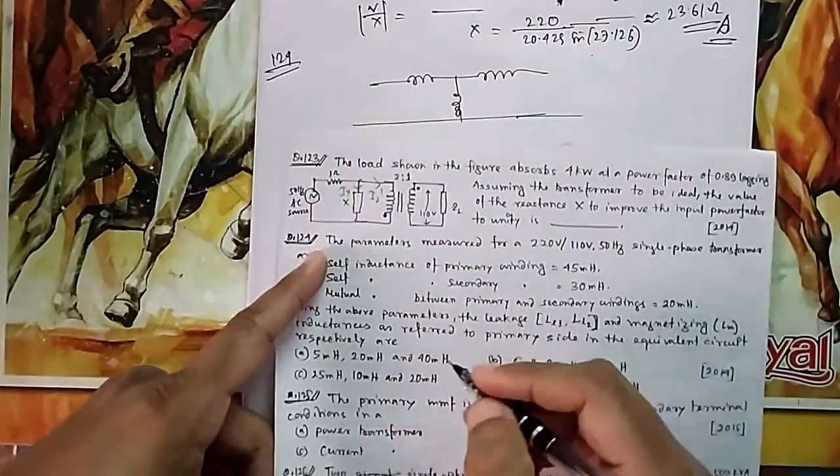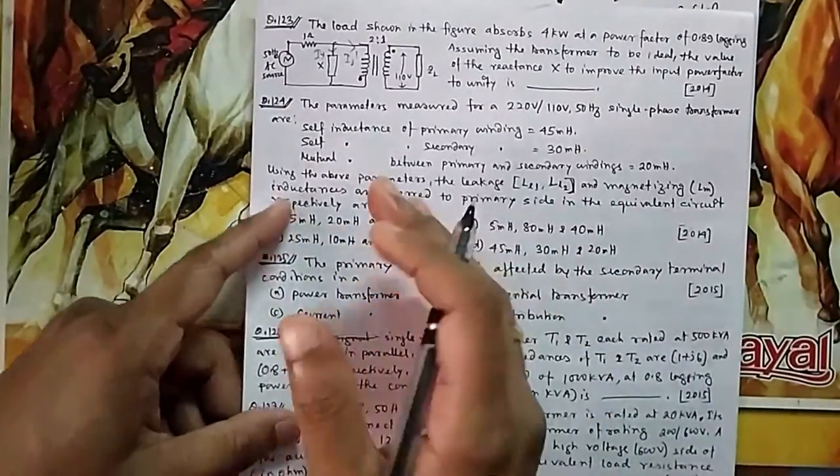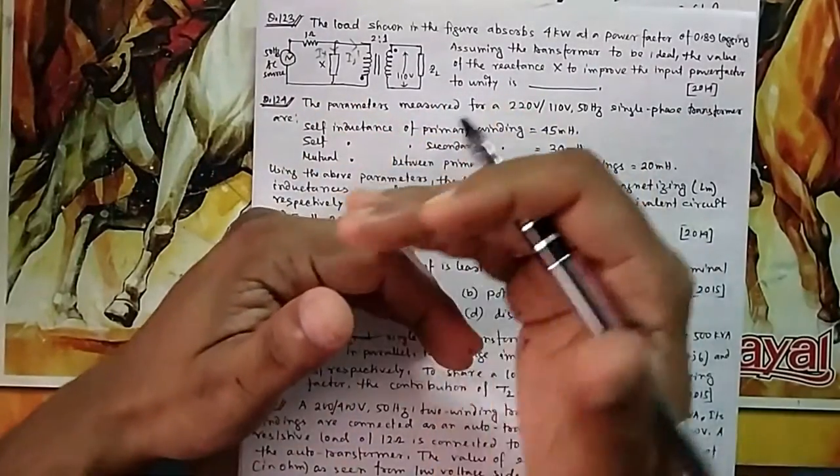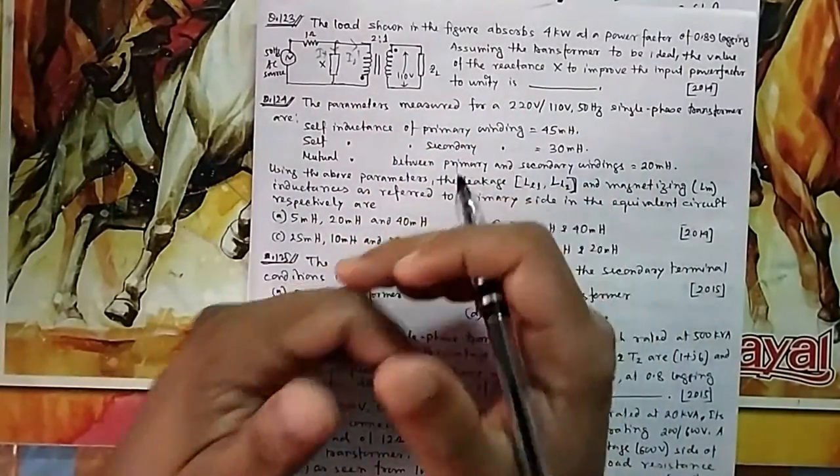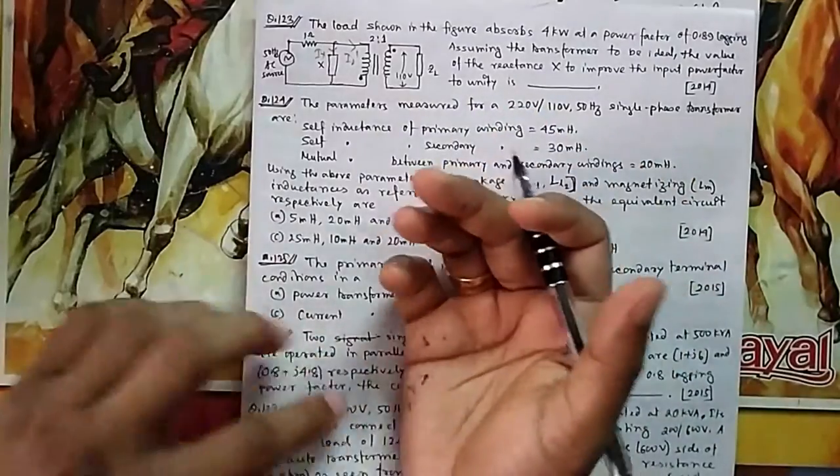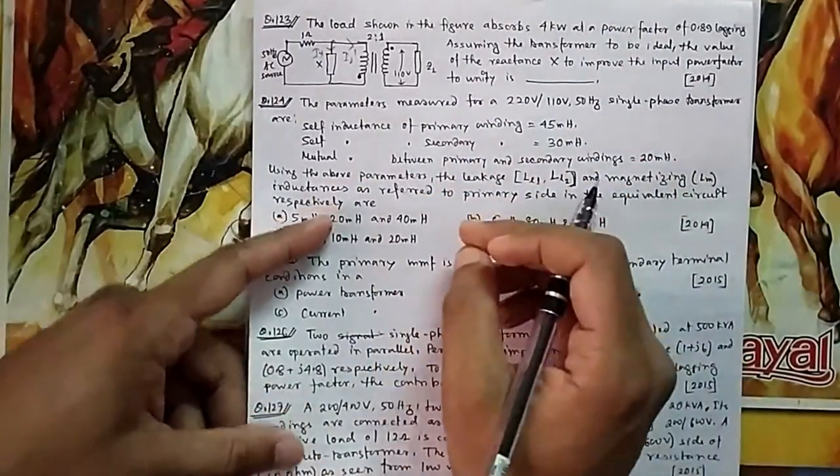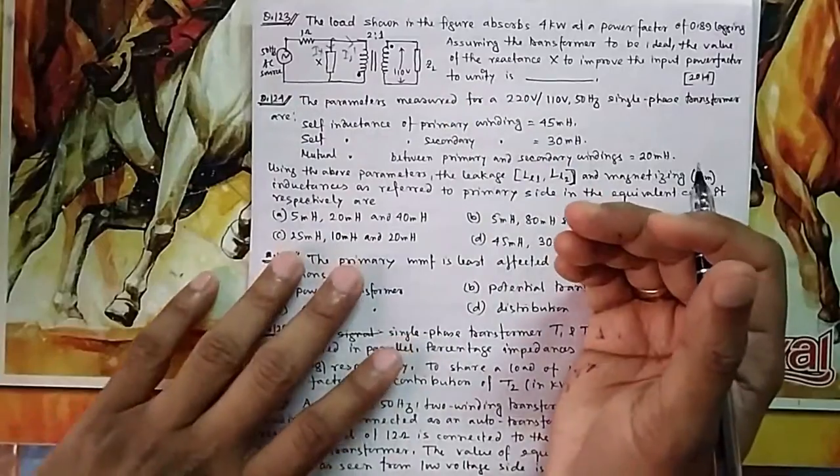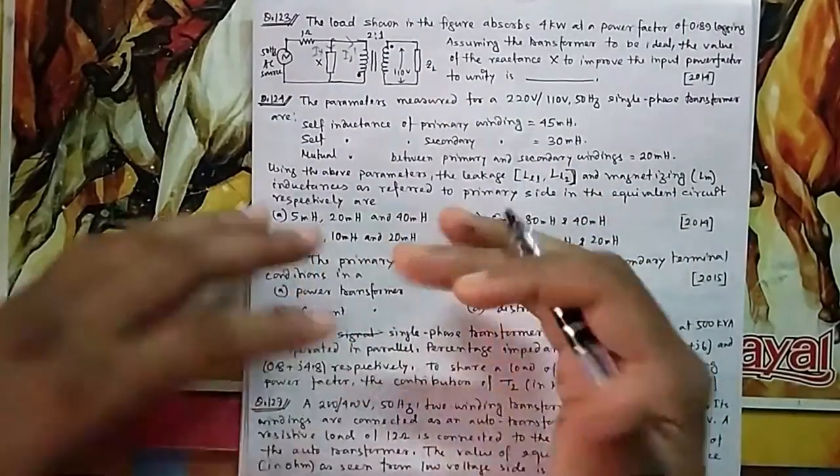If they are additive - because here it will be - it is a transformer, so it is obviously not additive. It will be subtraction because it is always phi 2 minus phi 1 that is kept constant. That's what I told you - transformer action. Your dot polarities - if one through one dot is entering, another dot it should come out.